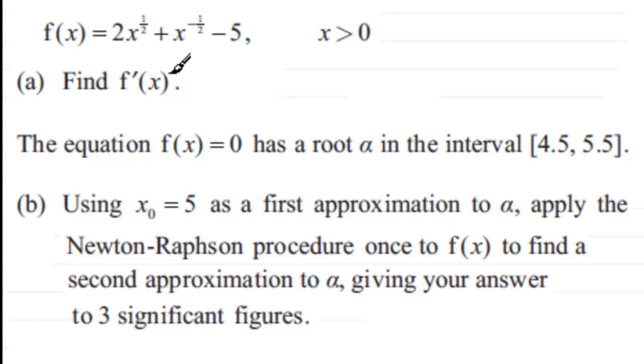Well first of all, if we've got to find the first differential of f(x) with respect to x, then f'(x) is going to equal, well two times a half is one, and then you've got x to the power minus a half if we reduce the power by one. And then for the next one we're going to get minus a half x to the power minus three over two, and differential of constant is zero. So there's f'(x).